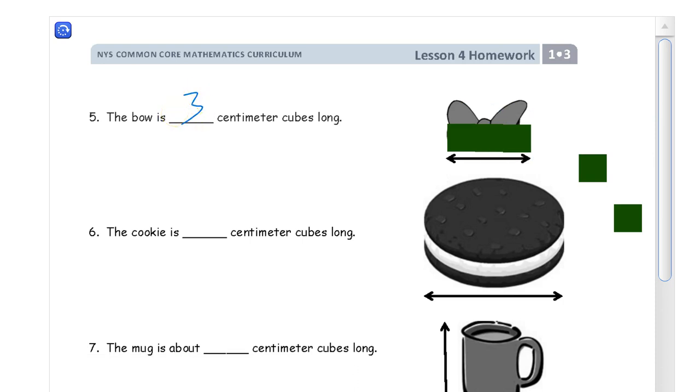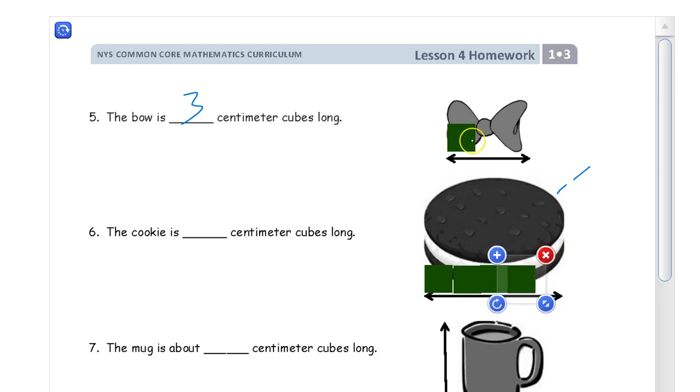And now we're looking at the cookie. One, two, three, four, five. So that one's going to be five centimeters cubed long.